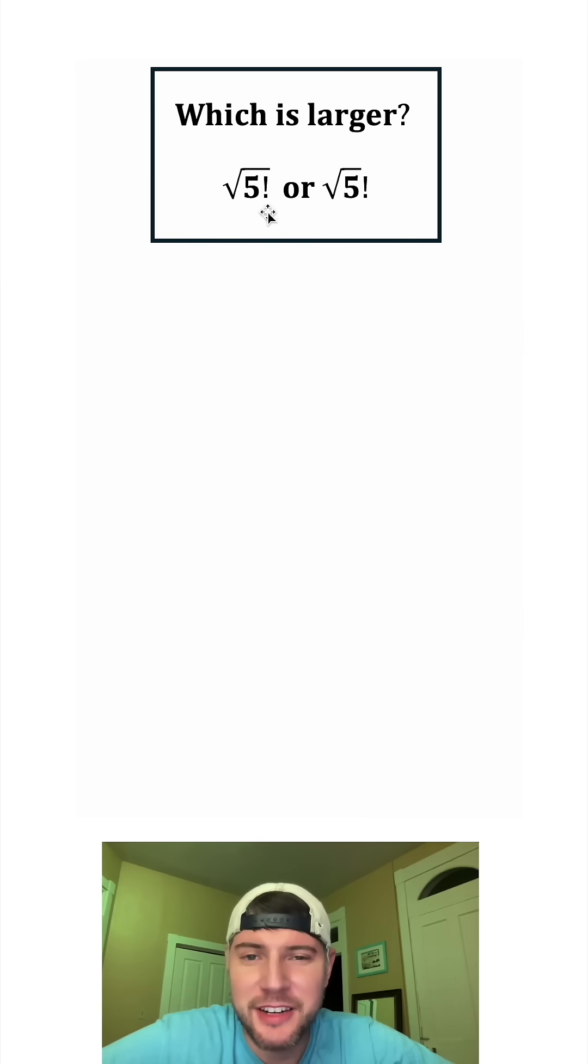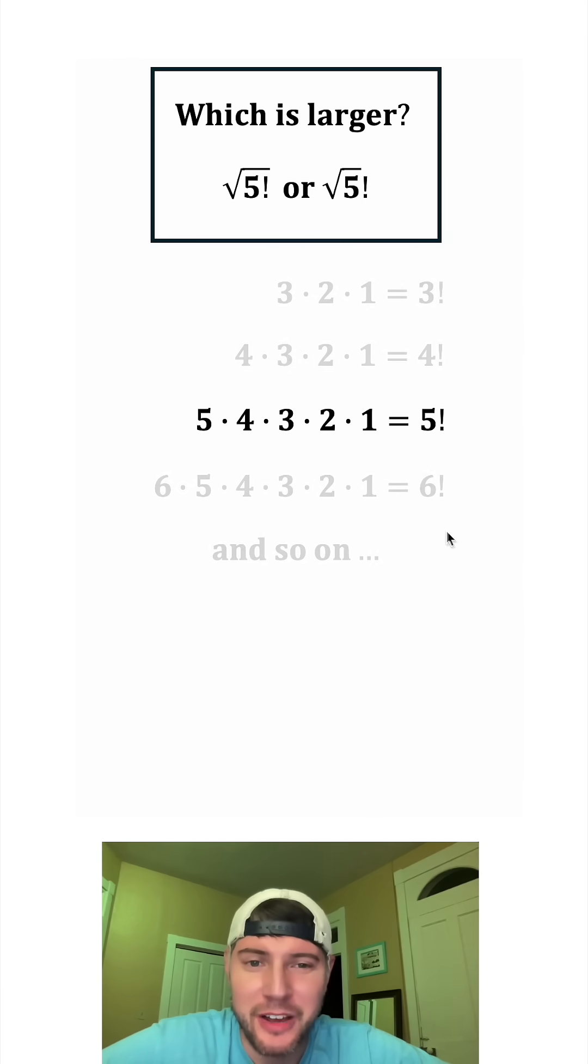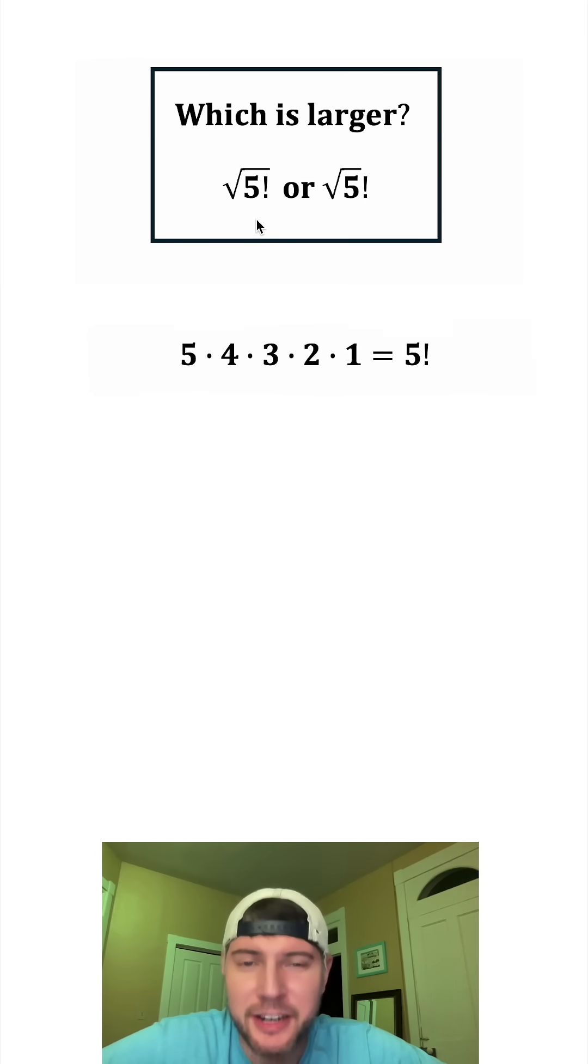Both of these contain a factorial. Let's talk about factorials. Here's some examples of whole number factorials. 4 factorial is 4 times 3 times 2 times 1, and 5 factorial is 5 times 4 times 3 times 2 times 1, and so on. And we're most specifically interested in this 5 factorial because that's what we have inside of the square root here.